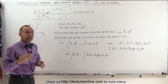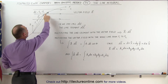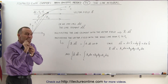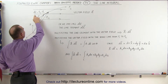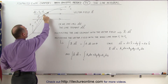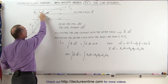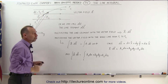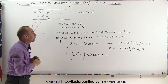Another position vector r2 points to that second point on the line. Then we can define that small change on the line as dr — it's a small vector going from the first point to the second — and that can be defined as r2 minus r1.